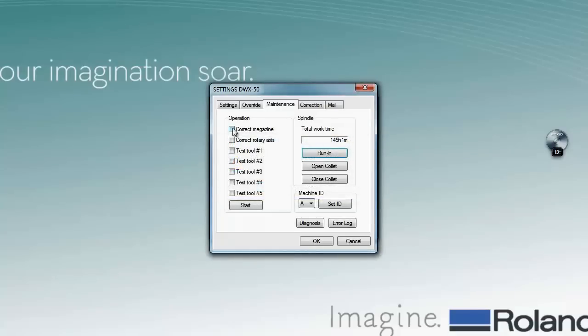After completing the run-in process, you're now ready to calibrate your machine. To do this, click on the correct magazine and correct rotary access button, and then click start.